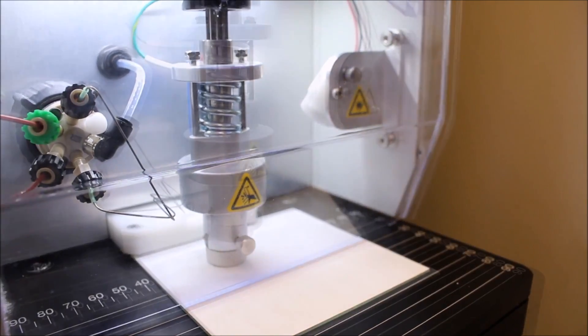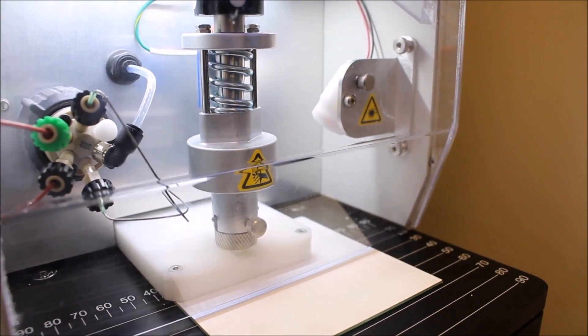Unlike LC-MS, where the mass spec is occupied for the entire duration of the chromatography, TLC-MS is much faster because the separations have already been done.